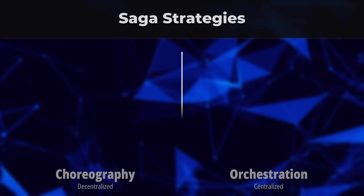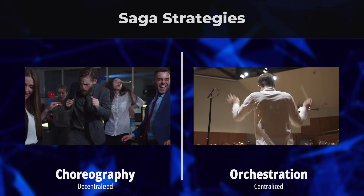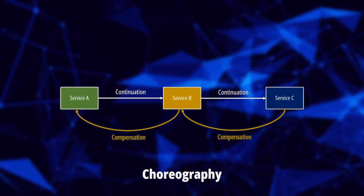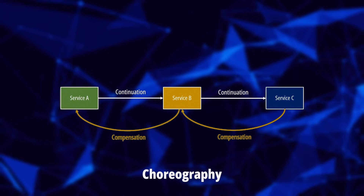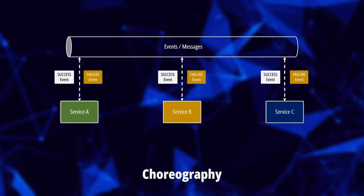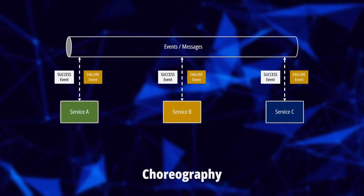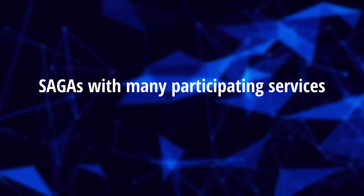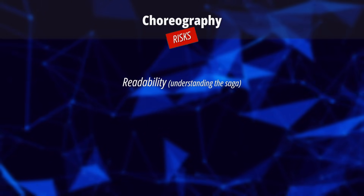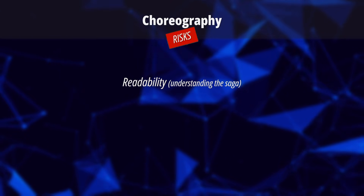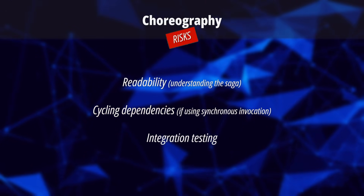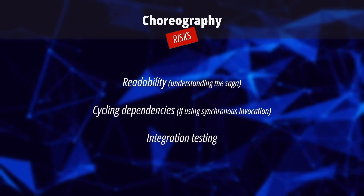There are two ways to implement sagas: choreography or orchestration. In the choreographed approach, the execution flow control is distributed among services. Each service is responsible for triggering either a continuation step or a compensation step, usually done with events to maximize decoupling. However, more complex sagas with many participating services are difficult to manage. The scope of the entire saga is not immediately evident, there is a risk of cyclic dependency between services, and integration testing is difficult because we need all services in place to simulate a transaction.